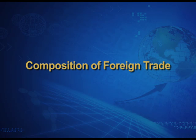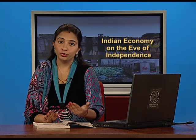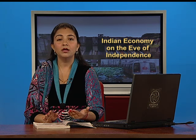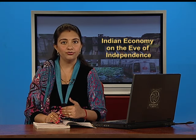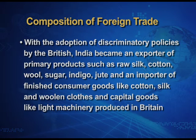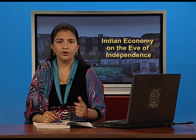Composition of foreign trade means what things were being exported by India and what goods were being imported into our country. With the adoption of discriminatory policies by the British, India became an exporter of primary products such as raw silk, cotton, wool, sugar, indigo, jute, etc.